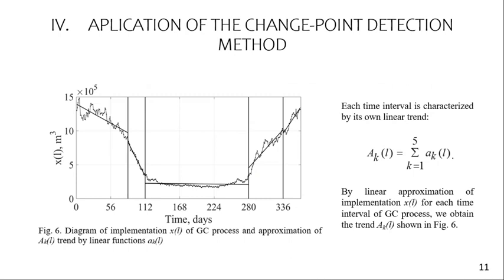After that, each time interval is characterized by its own linear trend. After linear approximation of implementation X(l) for each time interval of the gas consumption process, we obtain the trend of stochastic component N(k,l), shown on figure 6, with individual linear trends for each interval.